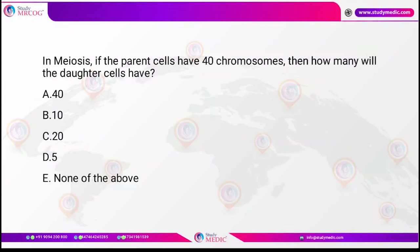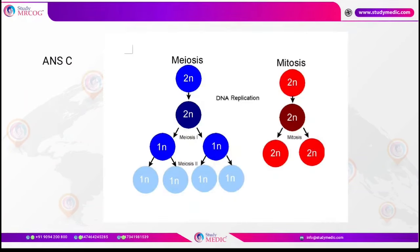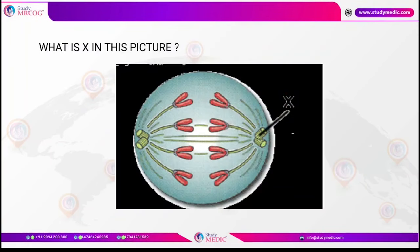Question: In meiosis, if the parent cells have 40 chromosomes, how many will the daughter cells have? Since meiosis is reduction division, if the parent has 40 chromosomes (2n), each daughter cell will have n = 20 chromosomes. To recap: meiosis is reduction division; mitosis is equational division. In meiosis, the diploid parent gives rise to 4 haploid daughter cells; in mitosis, the diploid parent gives rise to 2 diploid daughter cells. In the diagram, the structure marked X is the centriole, and the green lines are mitotic spindles attached to the centromere.